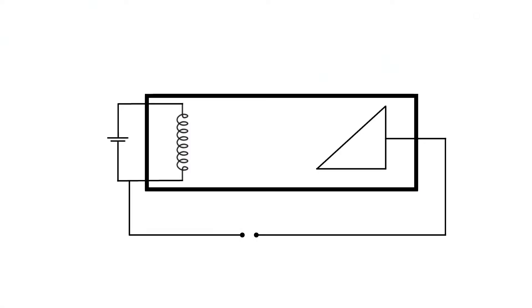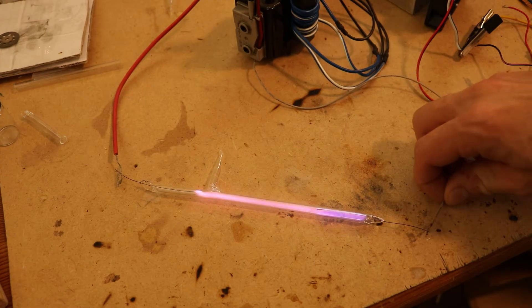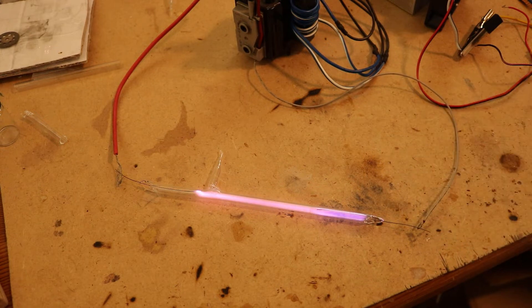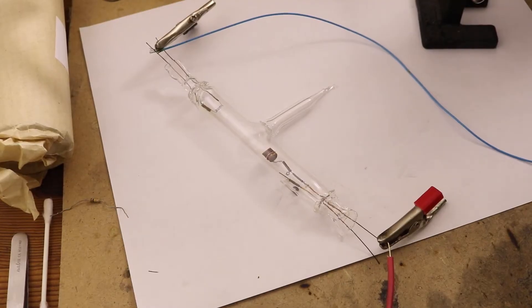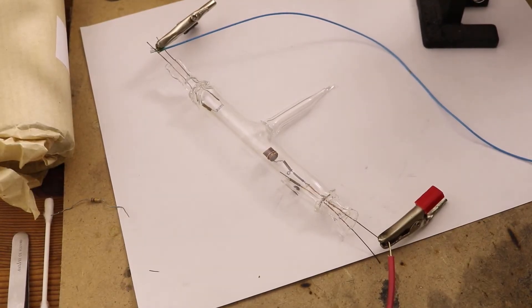They work by accelerating electrons from a cathode to an anode, creating so-called bremsstrahlung when they hit the anode material. In another video I made gas discharge tubes. They need a vacuum created by a normal vacuum pump. However, x-ray tubes need a much better vacuum.